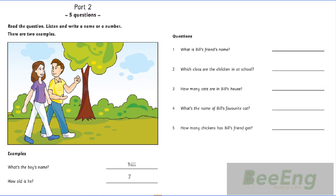5. Has Kim got a cat? No. She's got chickens. Chickens? How many? She's got fifteen. Fifteen? Yes. They're in the garden. That is the end of part two.